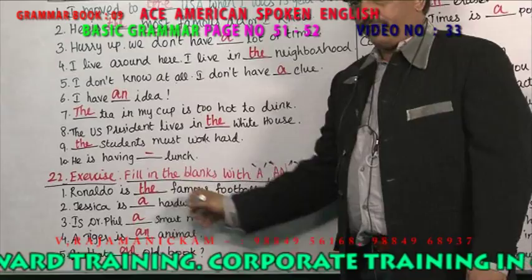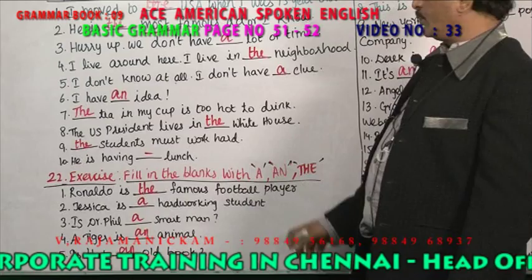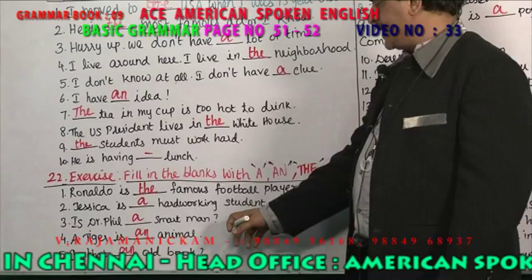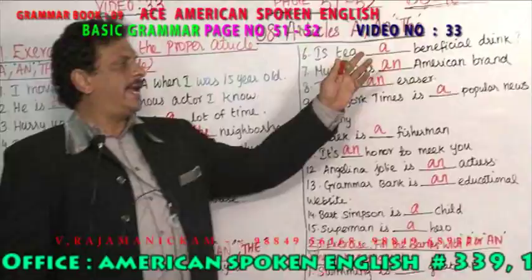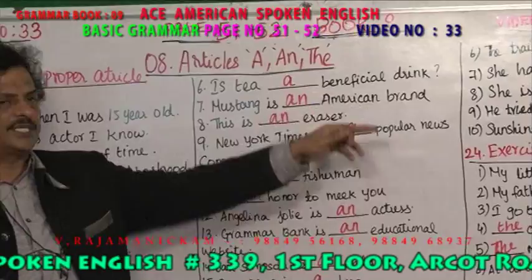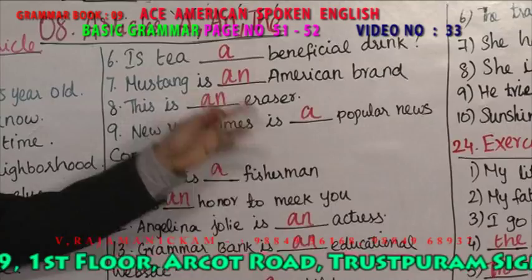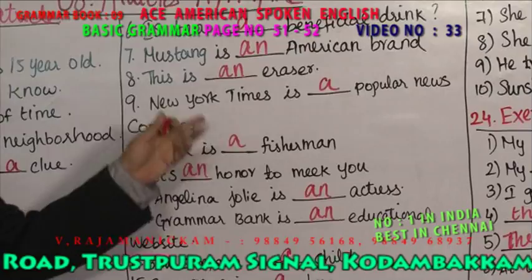Ronald is the famous football player — you already mentioned Ronald, so use 'the.' Jessica is a hardworking student. Is Dr. Phil a smart man? A tiger is an animal. Is that an old book? Is tea a beneficial drink? Mustang is an American brand. This is an eraser. New York Times is a popular news company. Derek is a fisherman. It is an honor to meet you.